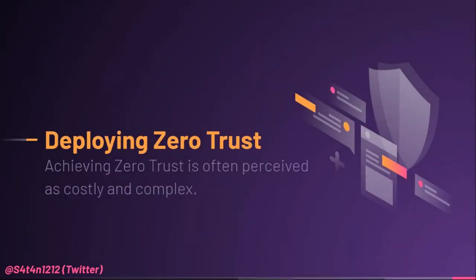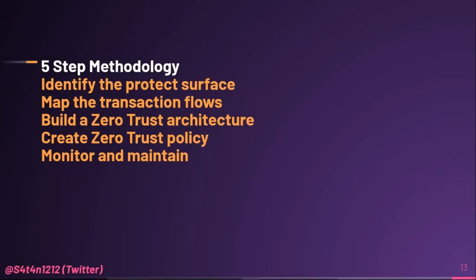It is a myth that achieving zero trust is costly and complex. Zero trust is built upon your existing architecture and does not require you to rip and replace existing technologies. There are no specific 'zero trust products' on the market — there are products that work in zero trust environments and those that don't. Zero trust is quite simple to deploy, implement, and maintain using a five-step methodology: identify the protect surface, map the transaction flows, build a zero trust architecture, create zero trust policy, and then monitor and maintain.